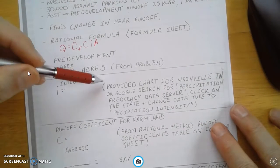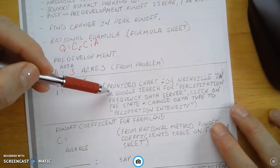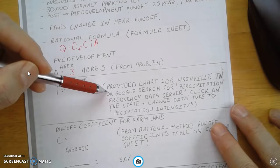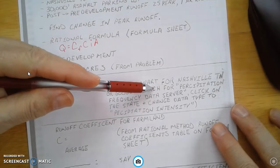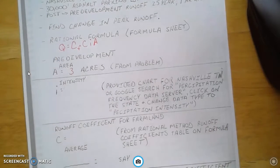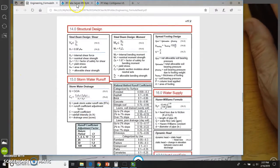Intensity comes from a chart from Nashville, Tennessee, and it's on the web. You do a Google search for precipitation frequency data server. Let's see if I can show you that right now.